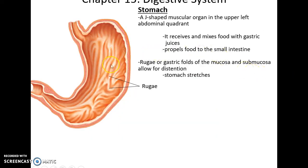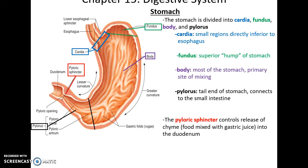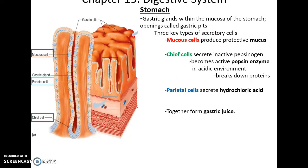The stomach is a J-shaped, soft, muscular organ — a pouch along the alimentary canal. It receives and mixes food with gastric juices and propels it into the small intestine. It has folds called rugae that are projections of the mucosa and submucosal layers, which also help the stomach stretch to hold large quantities of food. By region: the cardia is just after the esophagus, the fundus is the hump, most of it is the body, and it ends in the pylorus, which leads to the pyloric sphincter controlling movement into the small intestine. The stomach has many gastric glands that excrete gastric fluids.